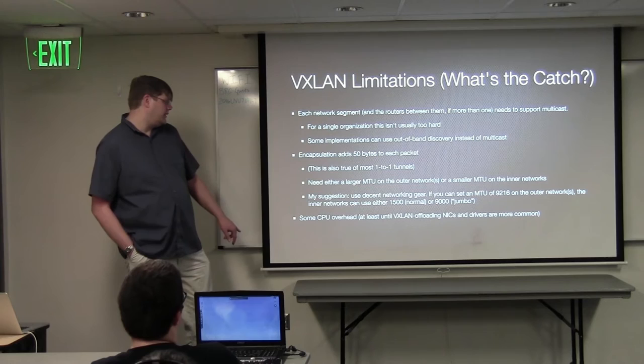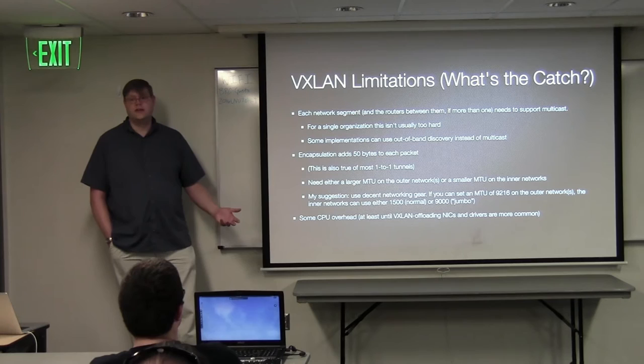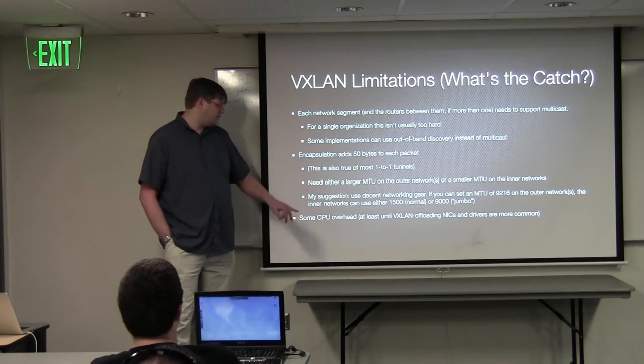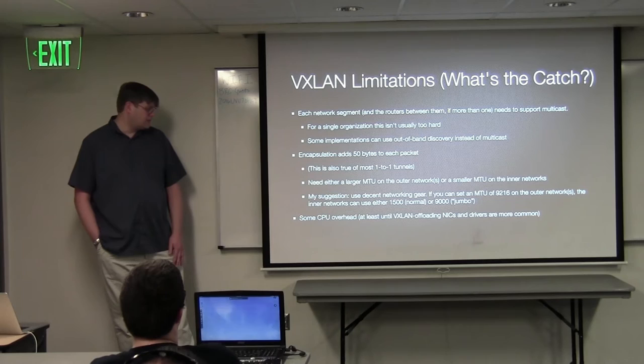My tip is: just use 9216 on all switches everywhere. Then you don't have to change anything if you suddenly decide to use jumbo frames. You can use 9000-byte jumbo frames with VXLAN and still have room left over.